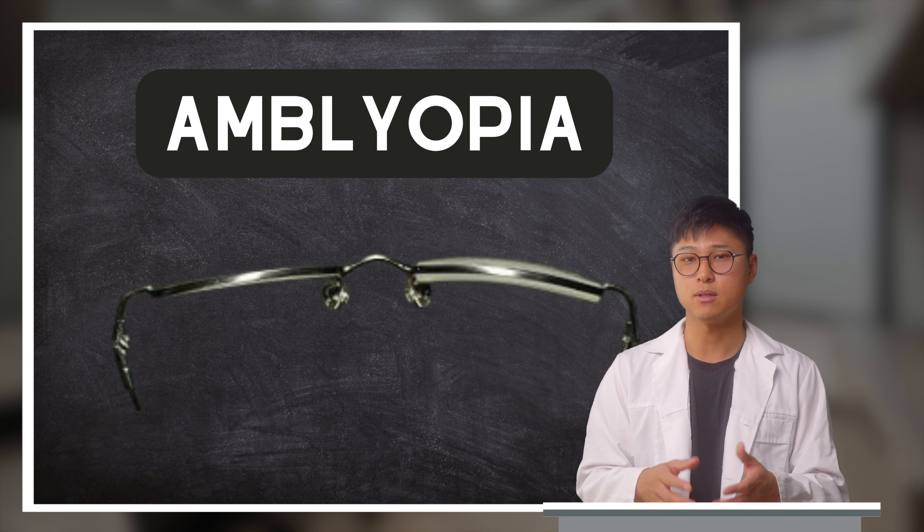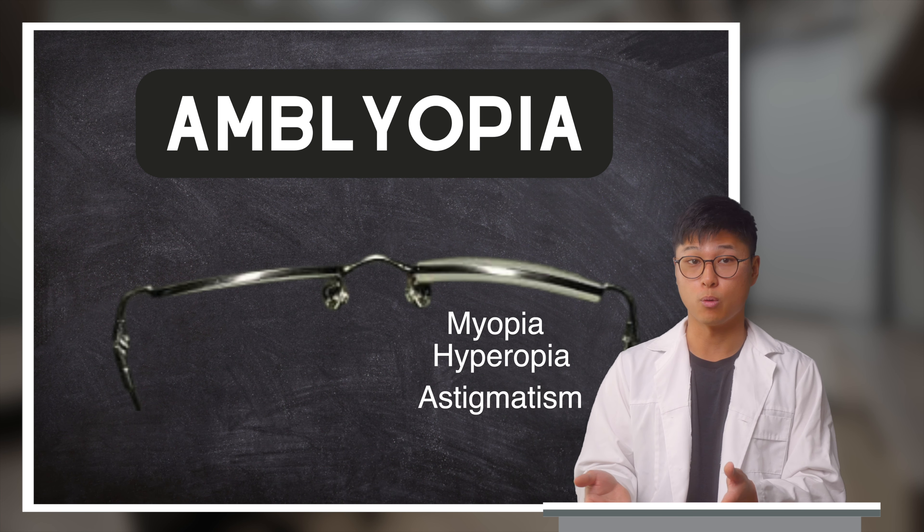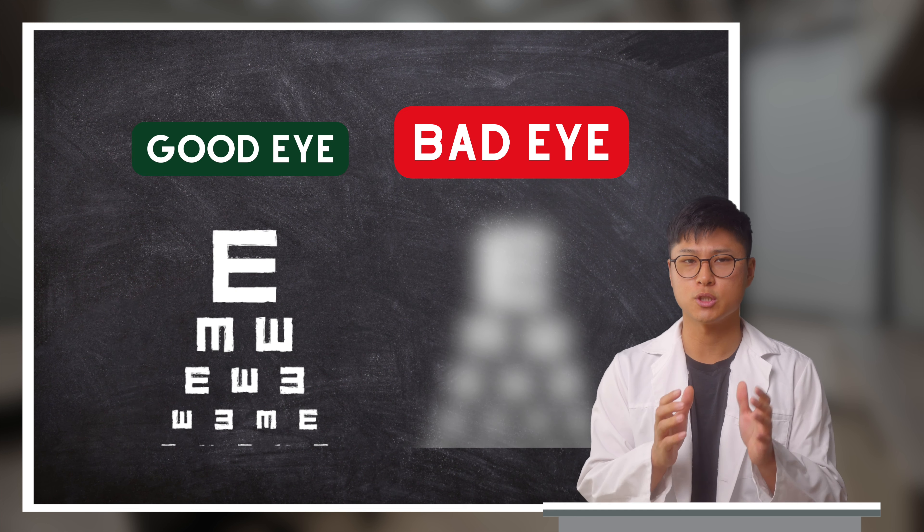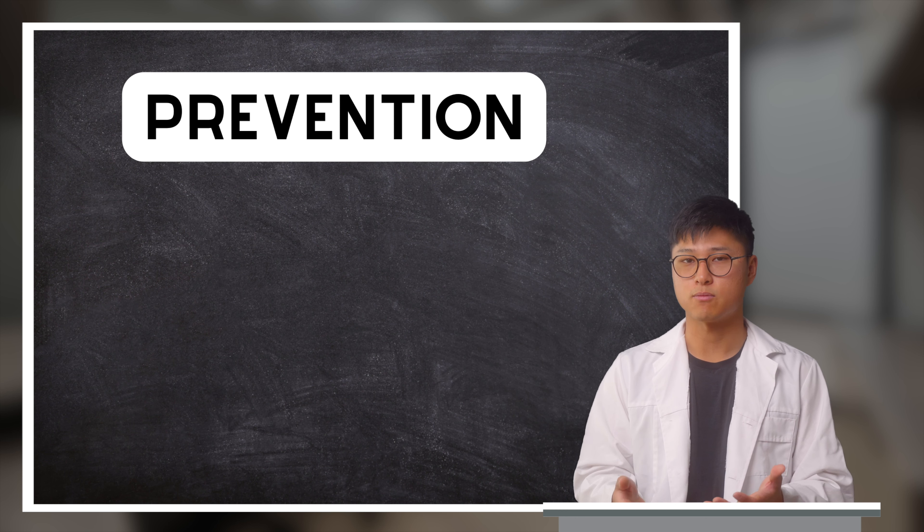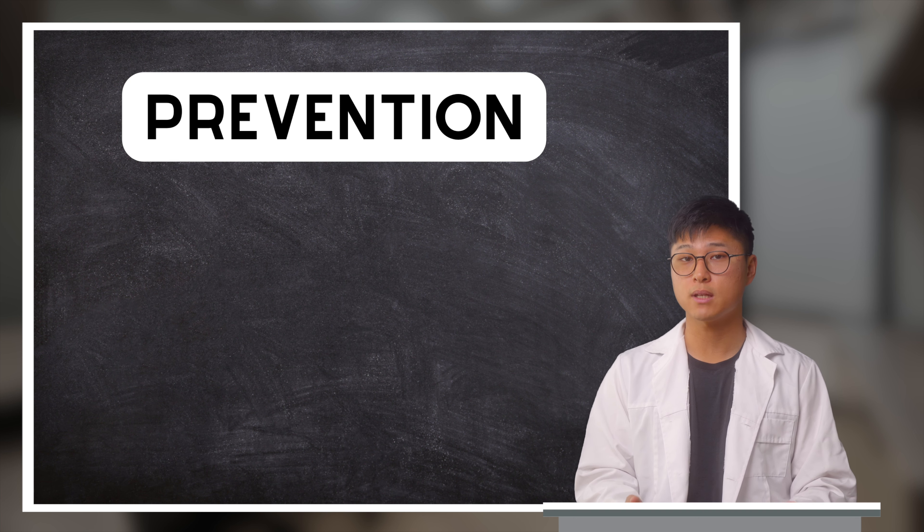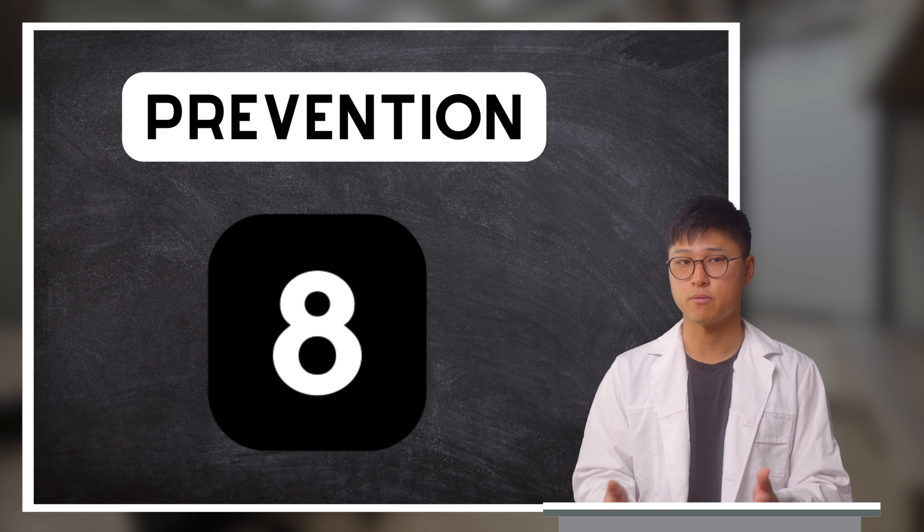Another cause of a lazy eye may come in the form of a large difference in refractive errors between the two eyes. If one eye is significantly more near or farsighted or even have significant astigmatism, then the brain will favor using the good eye and less of the bad one. The best way to fix a lazy eye is to prevent it from happening in the first place. Research has shown that the most effective time to do this is before the age of 8, because after that age, it becomes incredibly more difficult to make a difference.